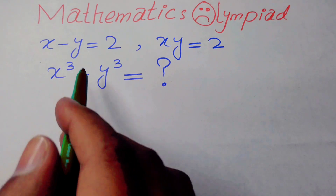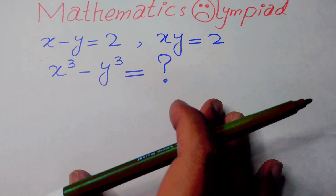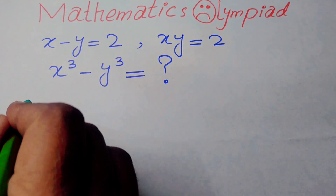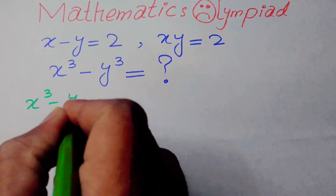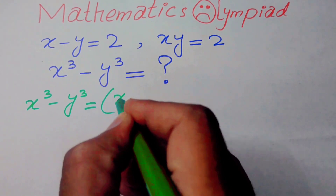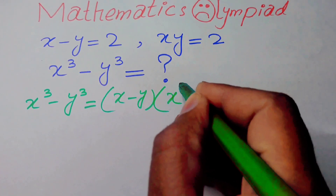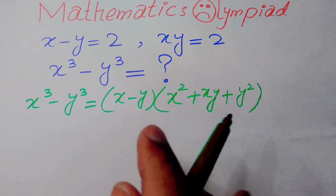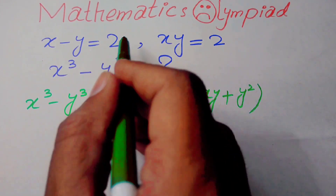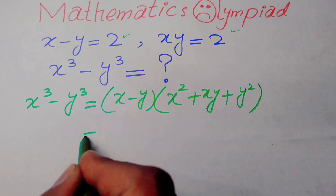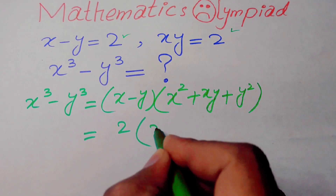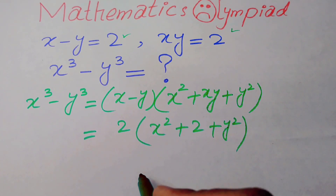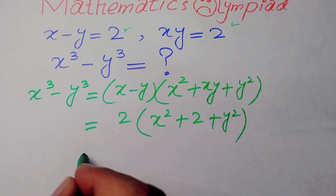We find the value of x cubed minus y cubed using these two values. We know the famous cubic formula: x cubed minus y cubed equals x minus y, times x squared plus x y plus y squared. We will use these two values in this formula and we will get 2 times of x squared plus 2 plus y squared.